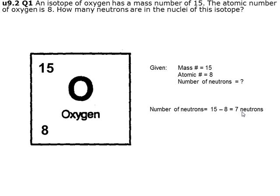Simple calculation here: 15 minus 8 is 7, so we know we have 7 neutrons in this isotope.